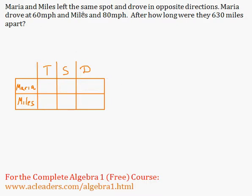Maria and Miles left the same spot and drove in opposite directions. Maria drove at 60 miles an hour and Miles at 80 miles an hour. After how long were they 630 miles apart?